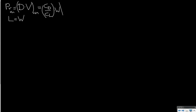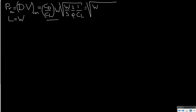We can write the airspeed as the square root of weight over S, times 2 over rho, times 1 over CL. Putting all variables under the square root gives weight to the power 3 divided by wing surface area, times 2 over air density, and CD squared divided by CL to the power 3.